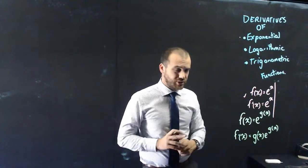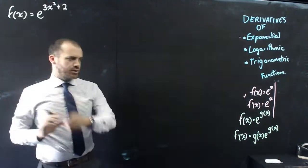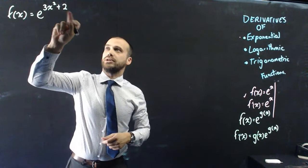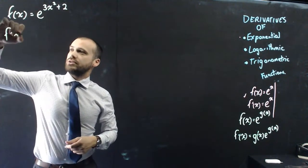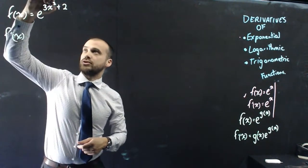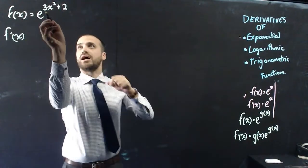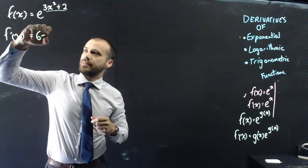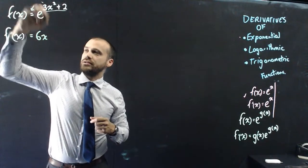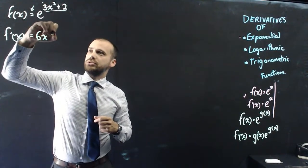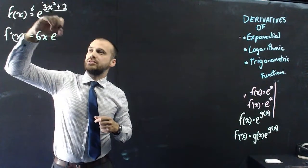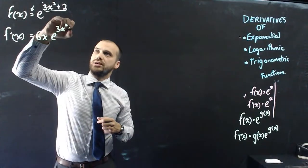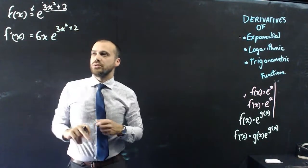It looks a little bit complicated, but it's actually really straightforward. Here's an example: if f of x equals e to the power of 3x squared plus 2, then f dash of x equals the derivative of that exponent. The derivative of 3x squared plus 2 is 6x, so that comes out to the front, and then we multiply by e to the power of 3x squared plus 2.